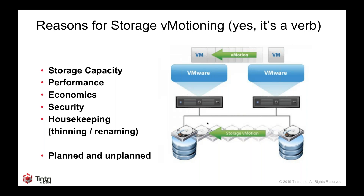It really comes down to planned and unplanned. Planned is: okay, this box, we're going to get rid of it by end of year, we can take our time with maintenance windows. But then there's also unplanned: oh, this thing's just about full, we need to move stuff off. Sometimes we're moving inside of an array with data stores cut from LUNs and volumes, moving to get on different tiers. Those are all reasons to do it.